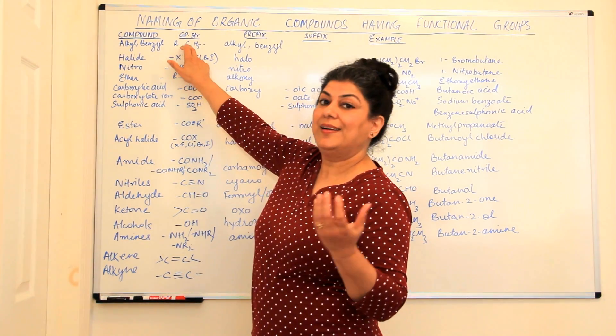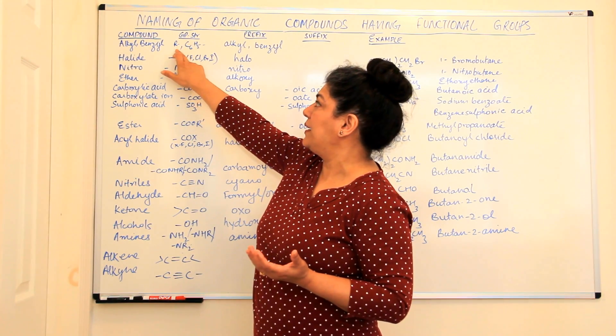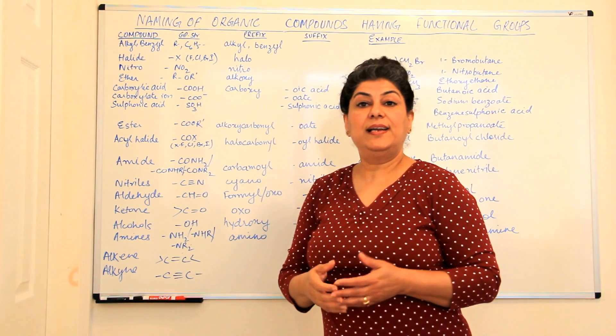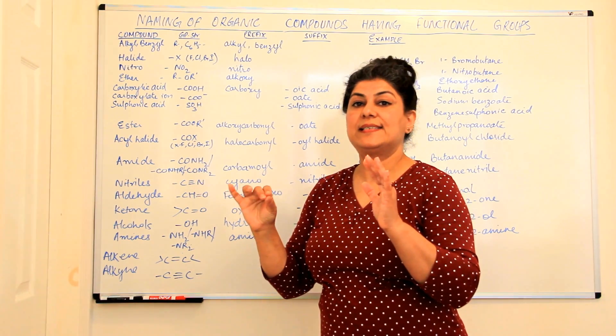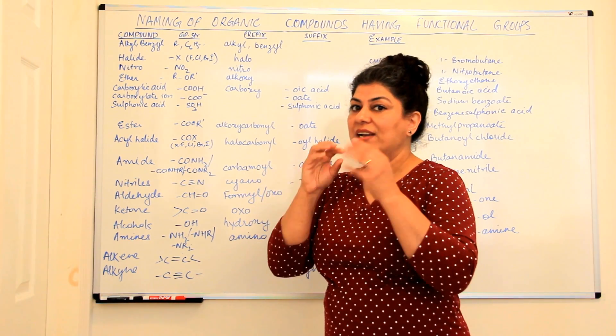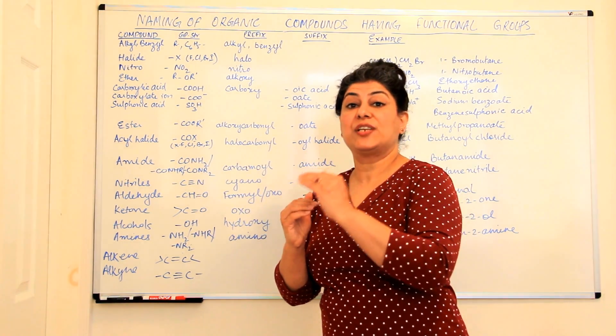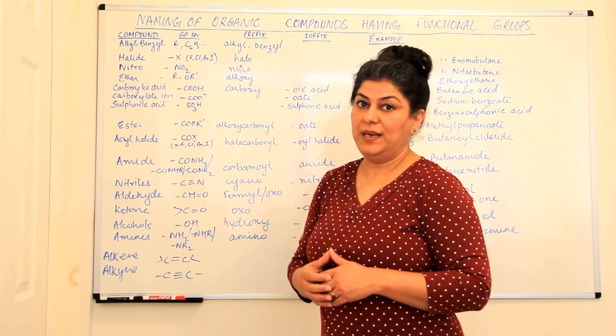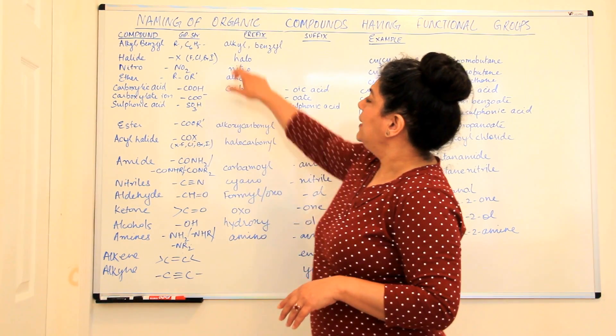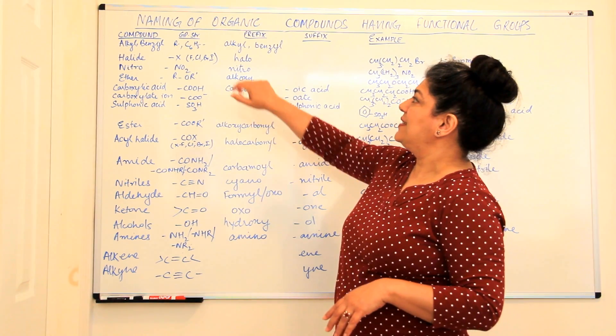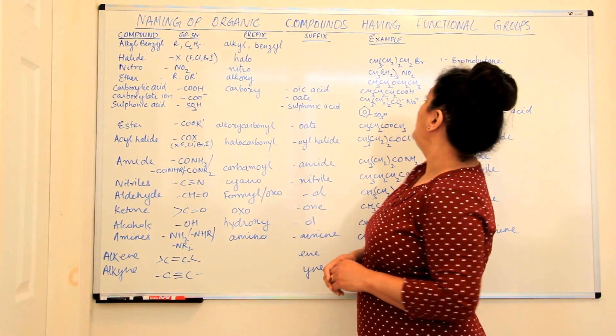We know alkyl is methyl, ethyl, propyl, it is represented by R and benzyl is C6H5, one hydrogen less from benzene and that hydrogen which is removed becomes the active site which attaches itself to the main hydrocarbon. They are always written as prefixes that is alkyl or benzyl.